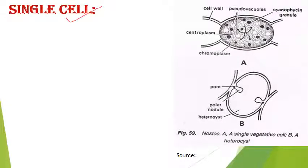The next topic is single cell structure. The single cell shows some similarities with the plant cell — it has a cellulose cell wall. The protoplast shows a typical myxophycean or cyanobacterial-like structure. There is a differentiation: the central portion is opaque or colorless, called centroplasm. The peripheral region contains pigments that provide color, and this is called chromoplasm.